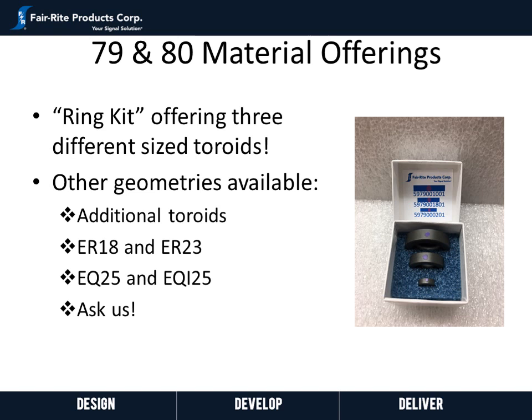For 79 and 80 material, we are currently offering a toroid ring kit which essentially consists of three toroid sizes ranging from an OD of 9.6 millimeters to 29.6 millimeters for material evaluation purposes. For 79 material we have several other toroid sizes available, and we are currently in the process of expanding the 80 material toroids. In addition, we have some planar ER and EQ cores available on 79 material, and will soon have planar cores available in 80 material. We also do a lot of custom cores.